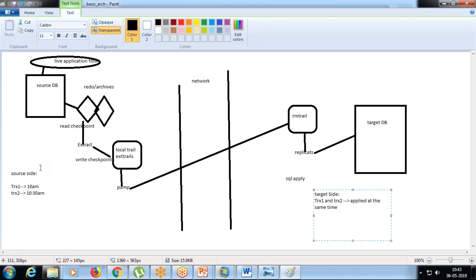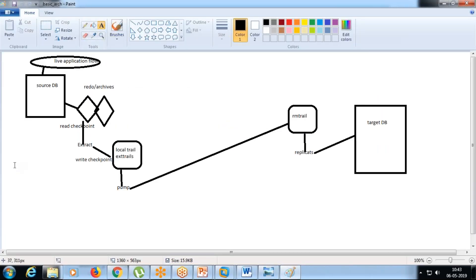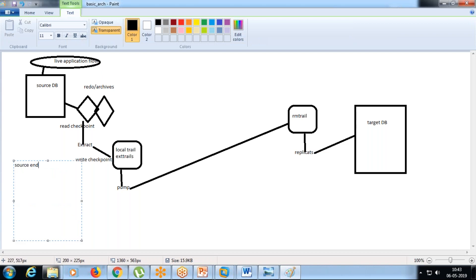This is the source end. We have transaction one committed at 10 a.m., transaction two at 10 a.m., transaction three at 10:20 a.m., and transaction 2-1 at 10:15 a.m. So on the source side we are having these three or four transactions, and all of them are committed within a span of 20 minutes.